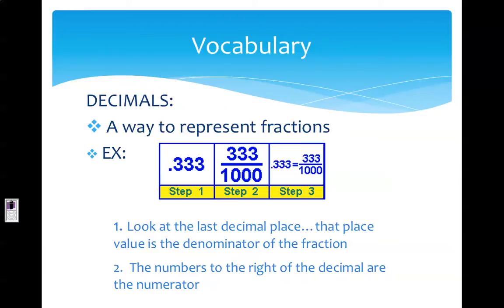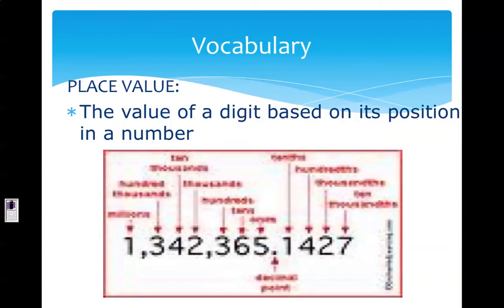Our first vocabulary word is decimals. Decimals are a way to represent fractions. In the example, we have the decimal 0.333. We look at the last place value in the decimal — it is the thousandths place. The thousandths represents the denominator, so we have one thousand in the denominator. The number to the right of the decimal, 333, represents the numerator, so my fraction would be 333 over a thousand.